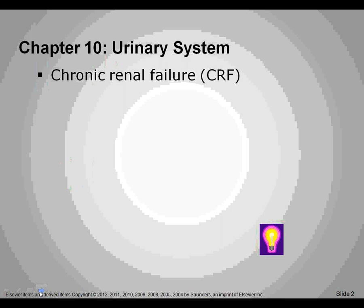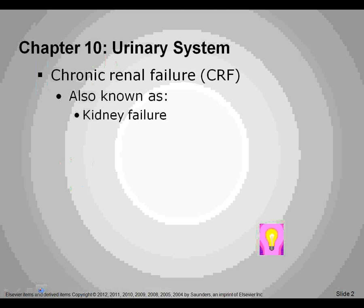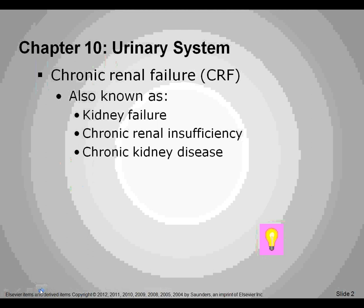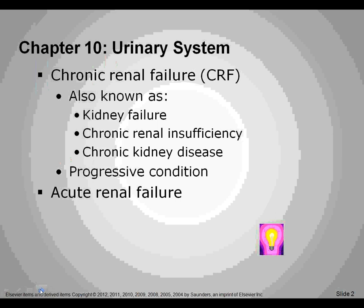Chapter 10, the urinary system, focuses on coding for services known as renal disease or renal failure. Chronic renal failure is also known as kidney failure, so renal and kidney are the same thing. Chronic renal insufficiency is another term, as is chronic kidney disease, and it is a progressive condition, which means that it worsens until there is usually a transplant. If that does not happen, then the person goes into acute renal failure.